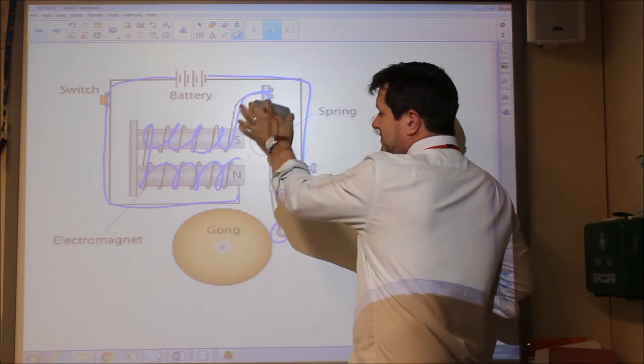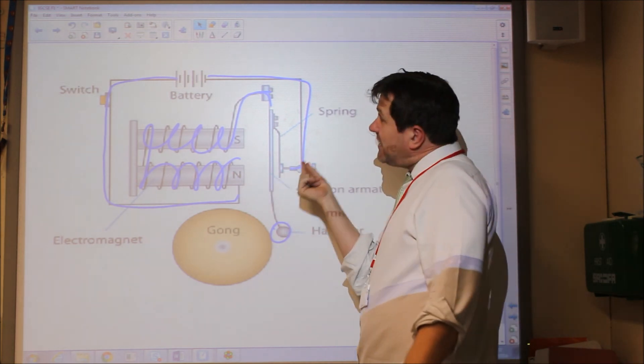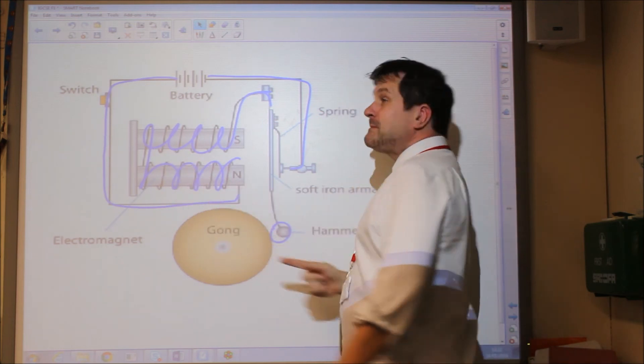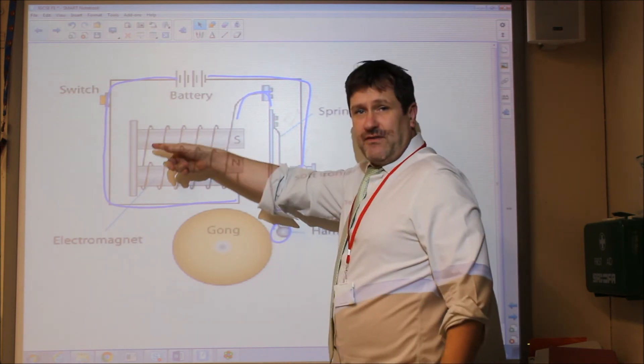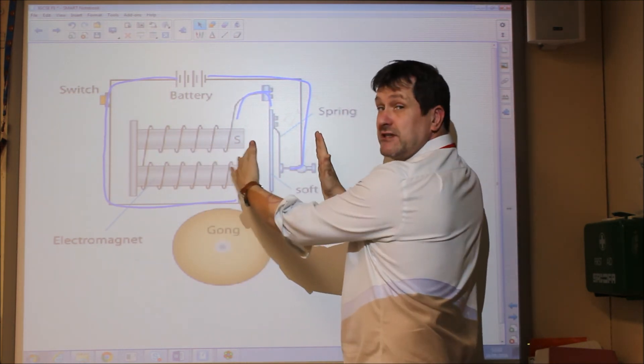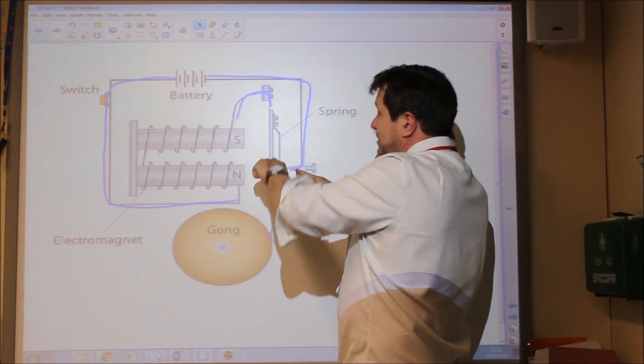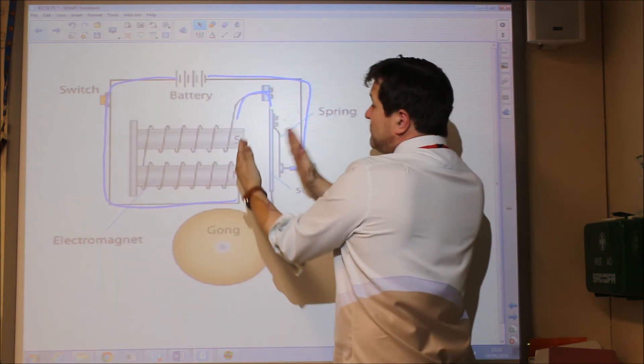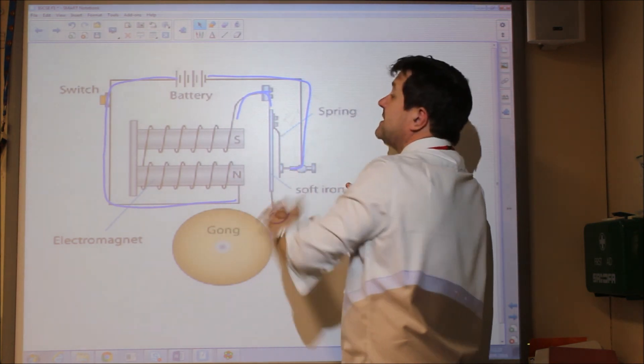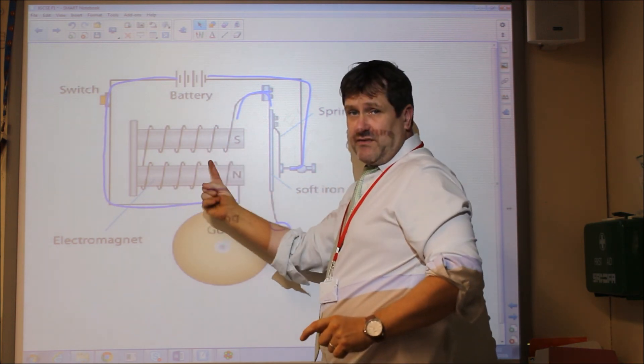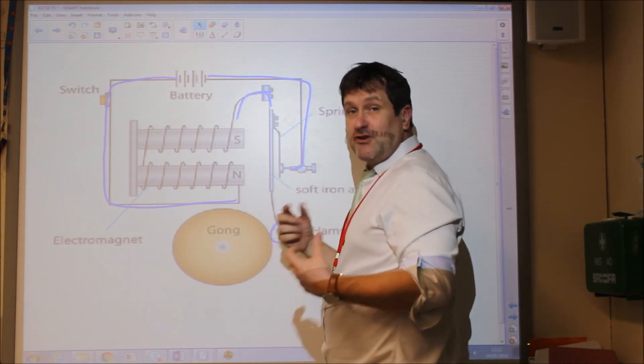But it's interesting to note that when the hammer moves to the left, the contacts are broken and therefore the electrical current stops flowing. This makes the iron core no longer magnetic because there's no current flowing. So the hammer returns to its original position. But when it returns to its original position, the electrical contact is created again and so the current flows around the iron cores again, making it magnetic, which causes the iron armature to be attracted again, hitting the gong, but again breaking the contacts here, turning off the electricity and therefore turning off the magnetic field. And this cycle repeats, causing the bell to ring. So that's a use of electromagnetism.